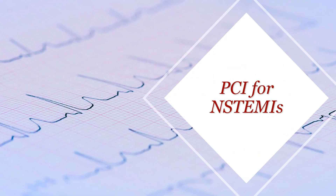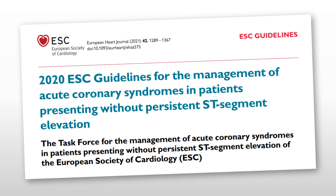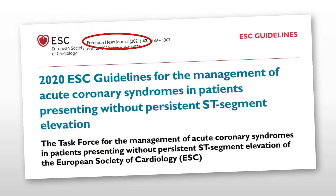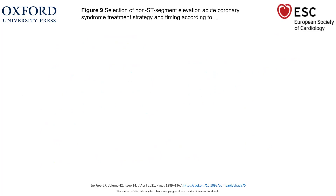What we're going to discuss is immediate PCI for non-STEMIs. The guidance we'll use is the European Society of Cardiology Guidelines 2020 — published in 2021 — on the management of acute coronary syndrome in patients presenting without persistent ST elevation. In those guidelines there were plenty of useful things, and this is one of the most useful flowcharts, talking about the selection of non-ST elevation ACS treatment strategies and their timing.